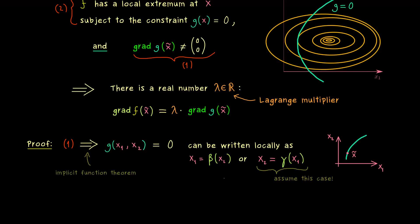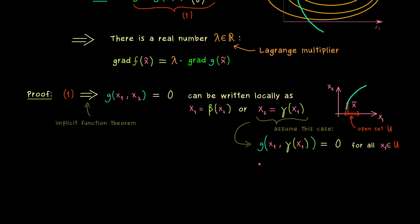And now the implicit function theorem also tells us that we can put this function γ into the function g. So we have this is equal to 0 for all x₁ in the neighborhood of x̃. So we have an open neighborhood in R for x₁. So maybe let's call this open set U. So it's not important at all how big U is. It's just important that the first component of x̃ lies in this open set U. And then locally around this point everything is nice.